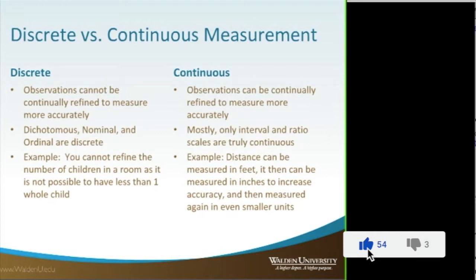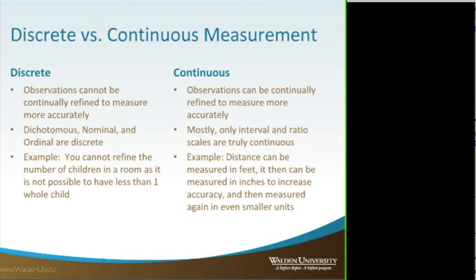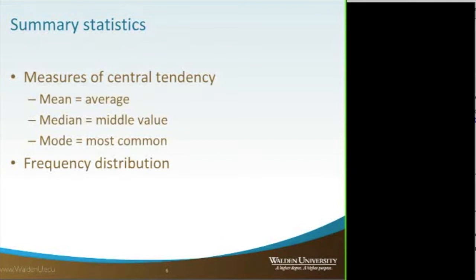Continuous variables obviously have numbers associated with them, so you can actually run means and standard deviations. You can break those data down into even smaller and smaller units. With discrete, you can't get any smaller unit than male and female. But if you're looking at height, you could be measuring it in feet, inches, centimeters, and so forth.